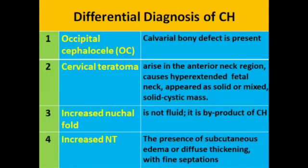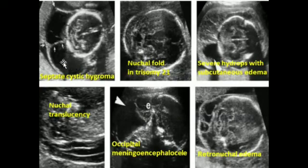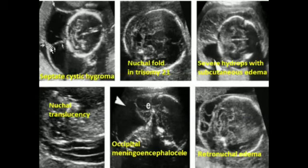The third differential is increased nuchal fold, which is a byproduct of cystic hygroma. The fourth differential is increased nuchal translucency — the presence of subcutaneous edema or diffuse thickening with fine septation is characteristic for increased nuchal translucency. This image shows septated cystic hygroma where the cysts are divided from each other by septations.